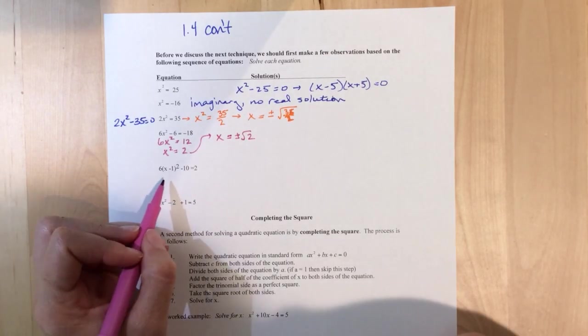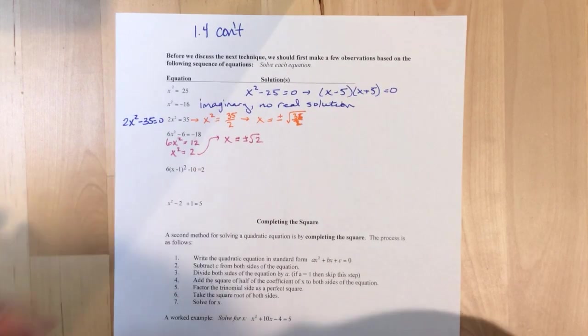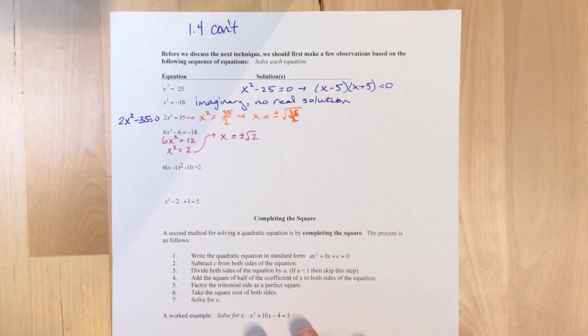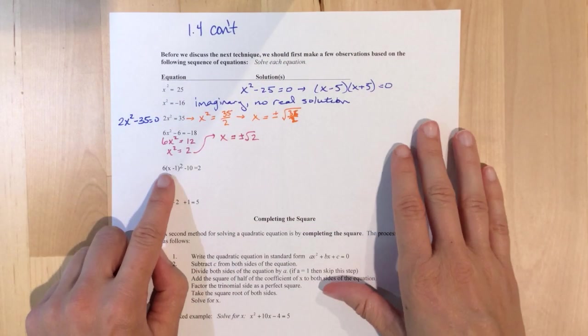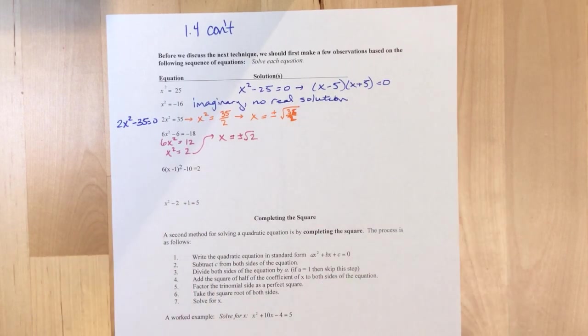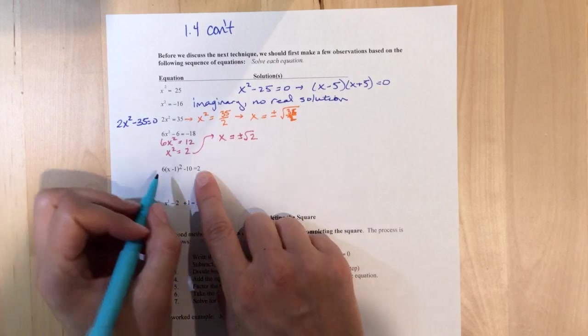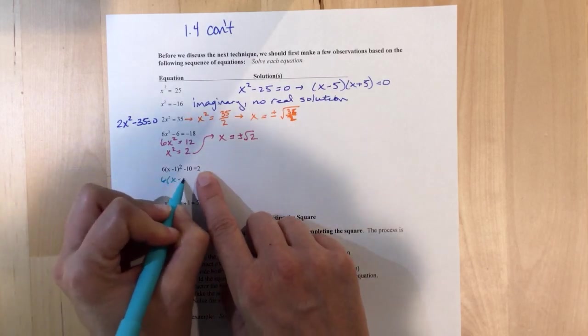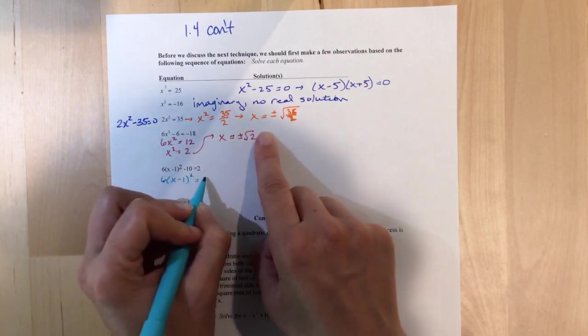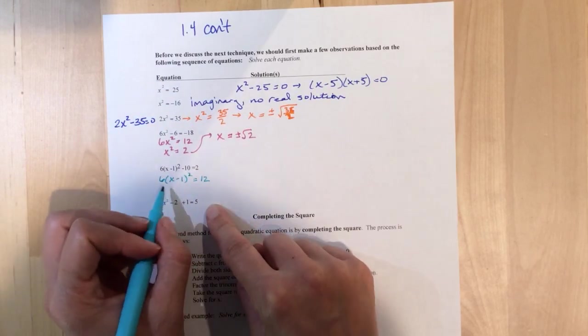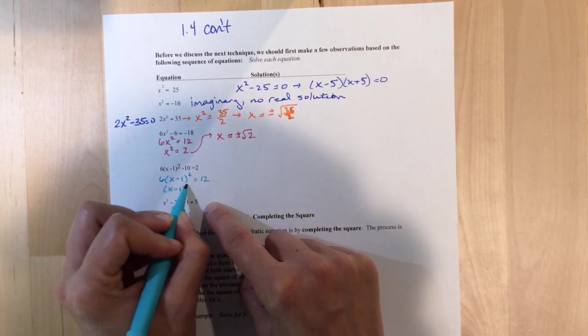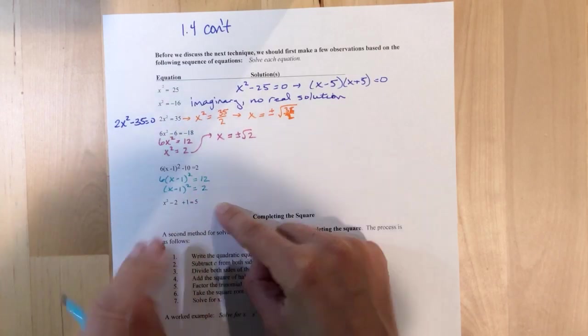But now, if we're working on this one, we're going to do the same thing. We're just going to unravel so that we can isolate the x. So what we're going to do first is add the 10. So I've got 6 times x minus 1 quantity squared equals 12. Divide that 6. So x minus 1 quantity squared equals 2.